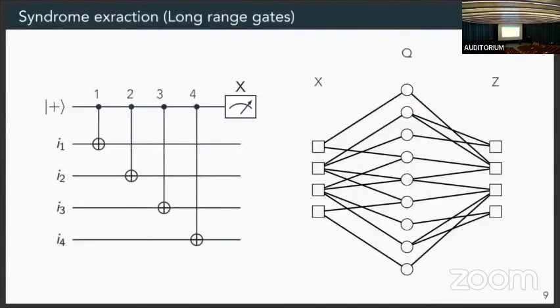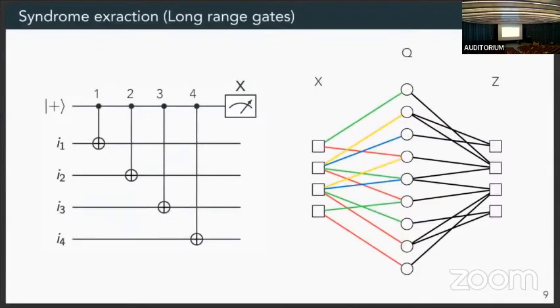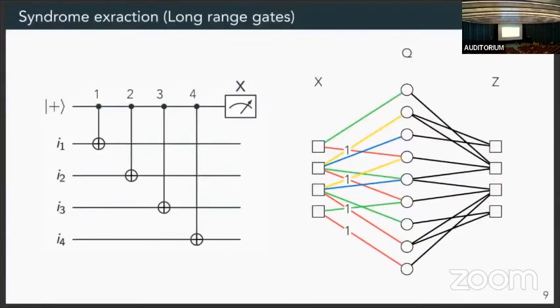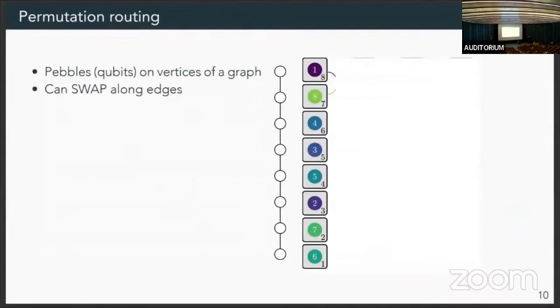So first I need to construct for you this syndrome extraction circuit. So with the long range gates, the way we do it is for every check to measure, we're going to introduce an ancilla, do some entangling gates on its support, and then measure the thing. So we just have to schedule the entangling gates. We can do this by solving a graph problem known as an edge coloring. And this is efficiently solvable for a bipartite graph. And what we do is we simply, in each step, for each coloring, we schedule all the gates of the same color in our time step. So one, two, three, four, and then we measure ancillas. So we have a syndrome extraction circuit that uses the long range gates. Now we need to make it local.